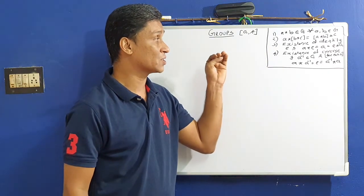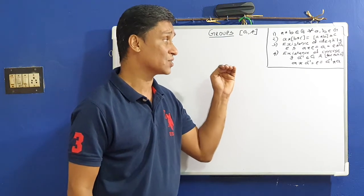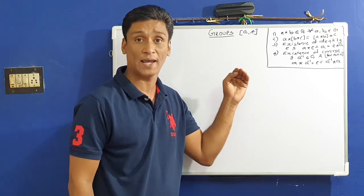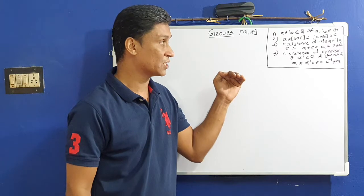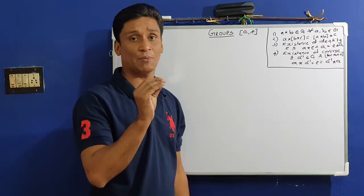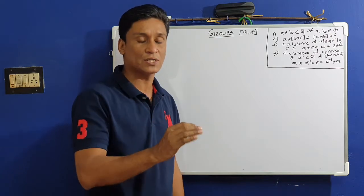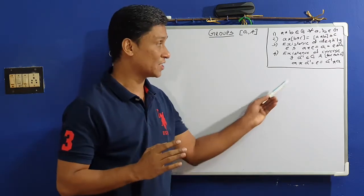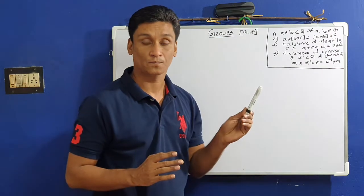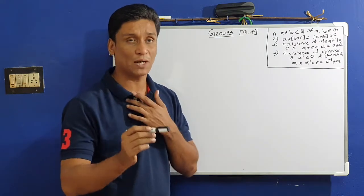Third: there should exist an element E in G such that A★E = A = E★A for all A element of G — existence of identity. Fourth: the existence of inverse — corresponding to each element A of G, we should find A-inverse in G satisfying A★A-inverse = E = A-inverse★A. Under these conditions, (G, ★) becomes a group.